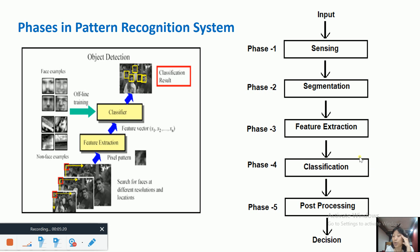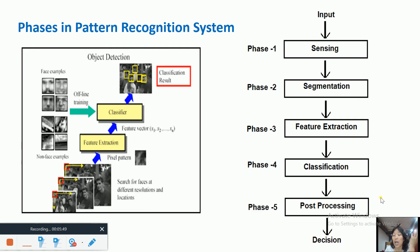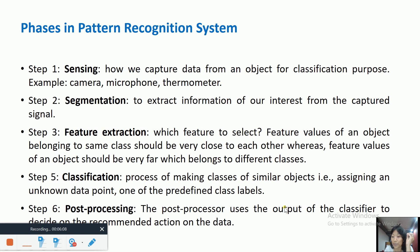The fourth phase is classification. Classification is the process of designing a classifier that groups patterns based on their similarities and dissimilarities — essentially making classes of similar objects. The fifth and last phase is post-processing, which is the process of assigning a class label to an unknown object correctly and accurately.